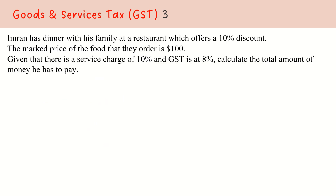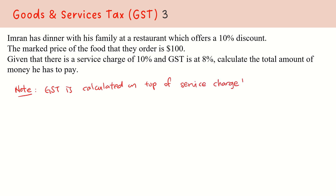We will now move on to a slightly more complicated goods and services tax question. We need to understand that GST is calculated on top of service charge. That means we need to find out the service charge amount first, then calculate our GST. When we go to a restaurant, they provide us with food, which is referred to as the goods in the GST context.